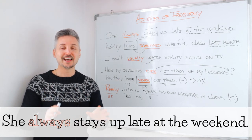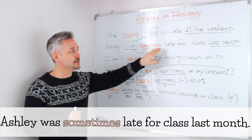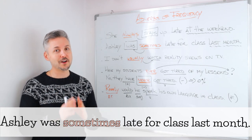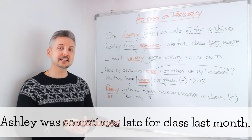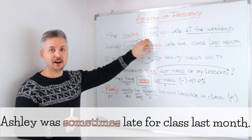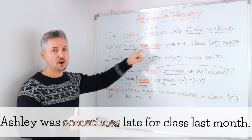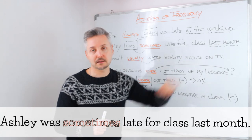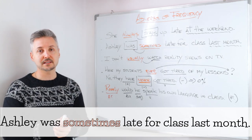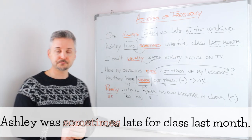There are exceptions. The first exception: 'Ashley was sometimes late for class last month.' In this case we have the verb to be, which is almost always an exception. The adverb of frequency is placed after the verb to be — 'was sometimes' — right after 'was,' then 'late for class last month.' 'Last month' is a time expression placed at the end of the sentence, or you could say 'Last month, Ashley was sometimes late for class.' It's the same thing.